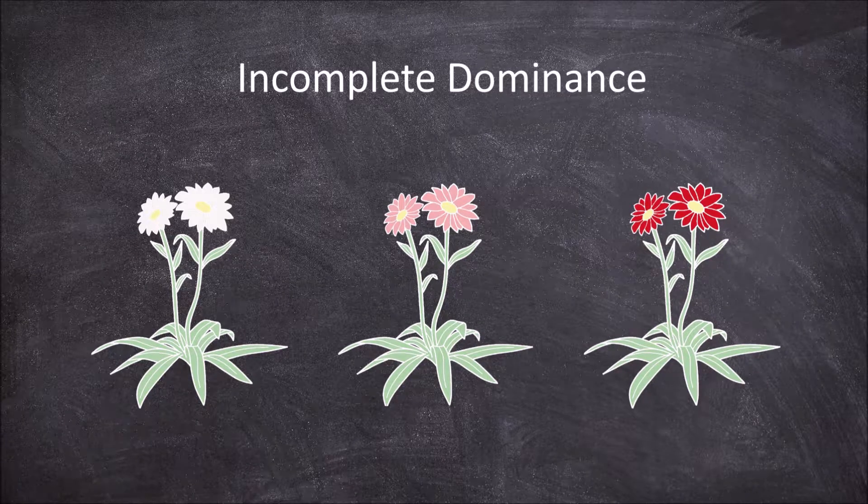In this video we're going to go over incomplete dominance. Incomplete dominance is an example of inheritance where there is not complete dominance of one variant of a gene over the other.